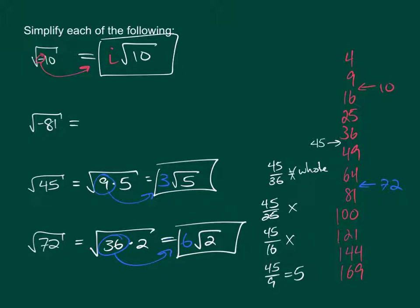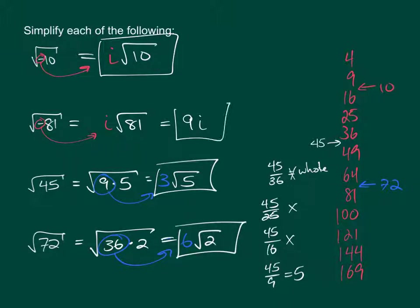For this other example, again the negative comes out front of the radical as an i, and we're left with the square root of 81 afterward. The square root of 81 is in fact 9, so we can rewrite this as 9i. And there's your answer for that example.